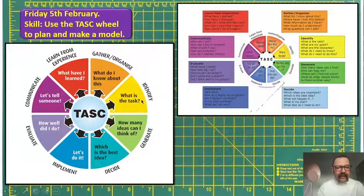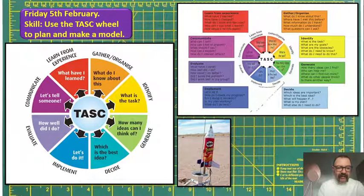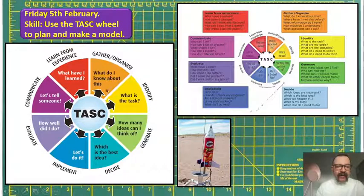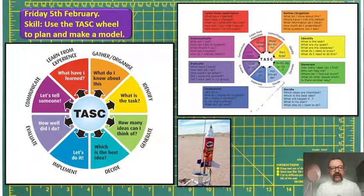Your task is to make a model. We've identified that, and I'd like you to make a model of a spacecraft. It can be any kind of spacecraft that you want to design. The first part of our wheel is: what do I know about this? I'd like you to do a little bit of research on spacecraft — either real spacecraft. We've had a look at the ISS, we've seen clips of shuttles and things like that.